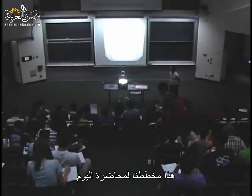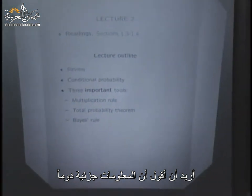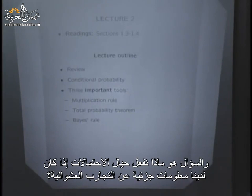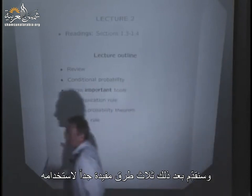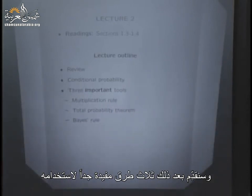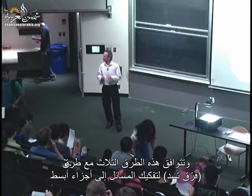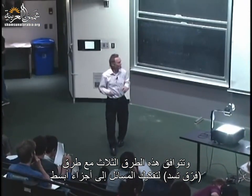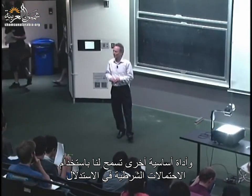Here's the agenda for today. We're going to do a very quick review, and then introduce some very important concepts. The idea is that all information is always partial, and the question is what do we do to probabilities if we have some partial information about a random experiment? We're going to introduce the important concept of conditional probability, and then we will see three very useful ways in which it is used.